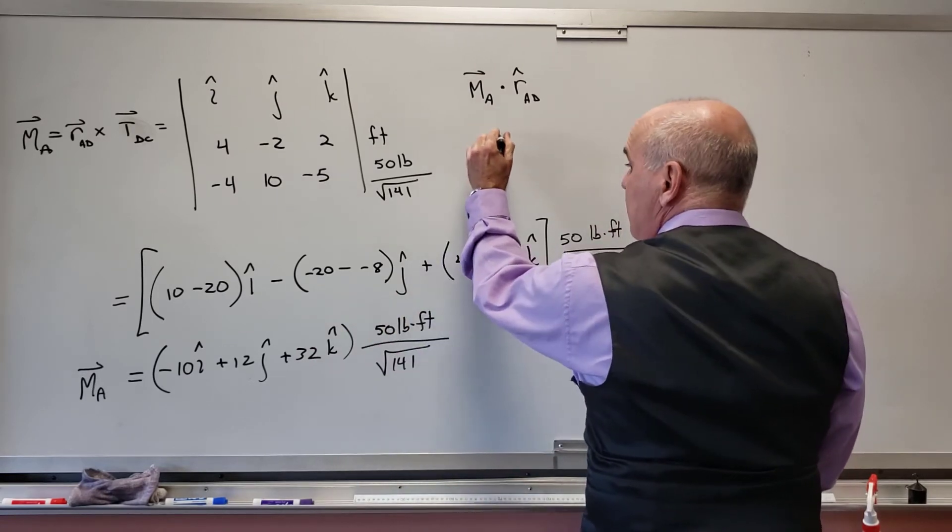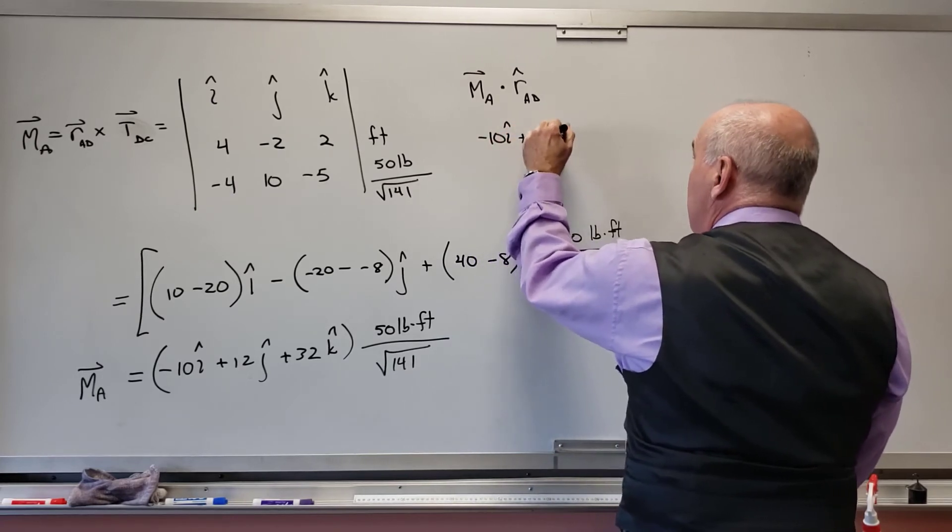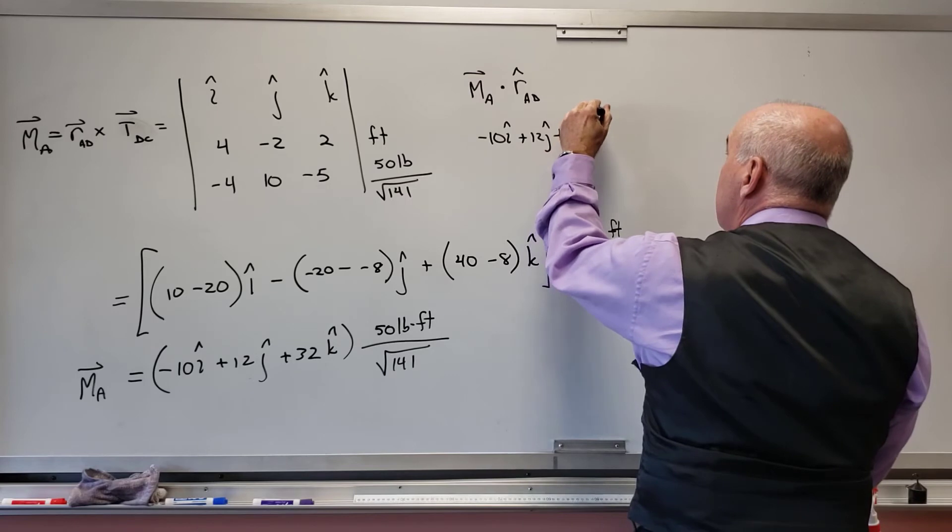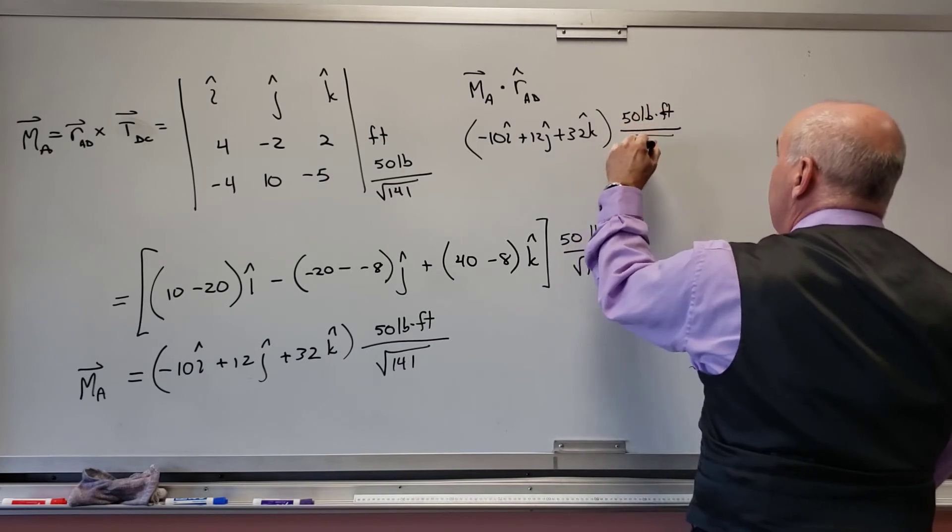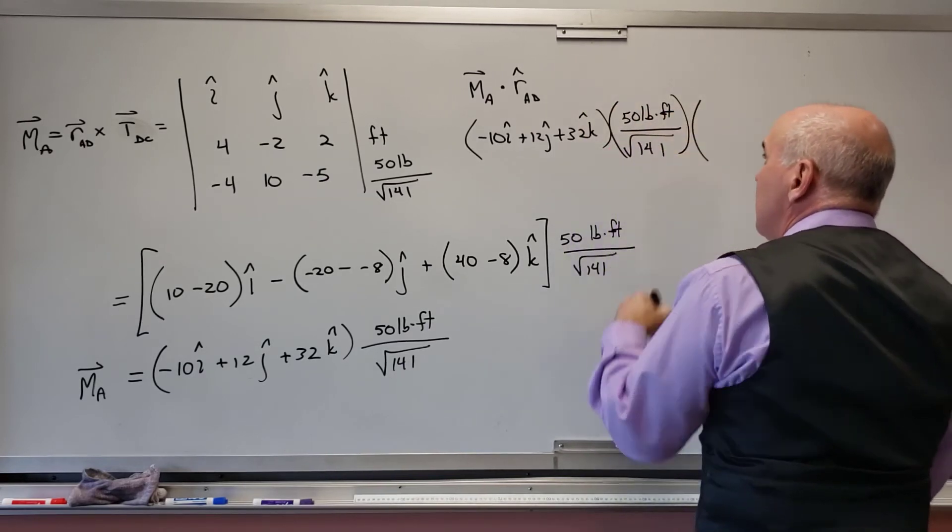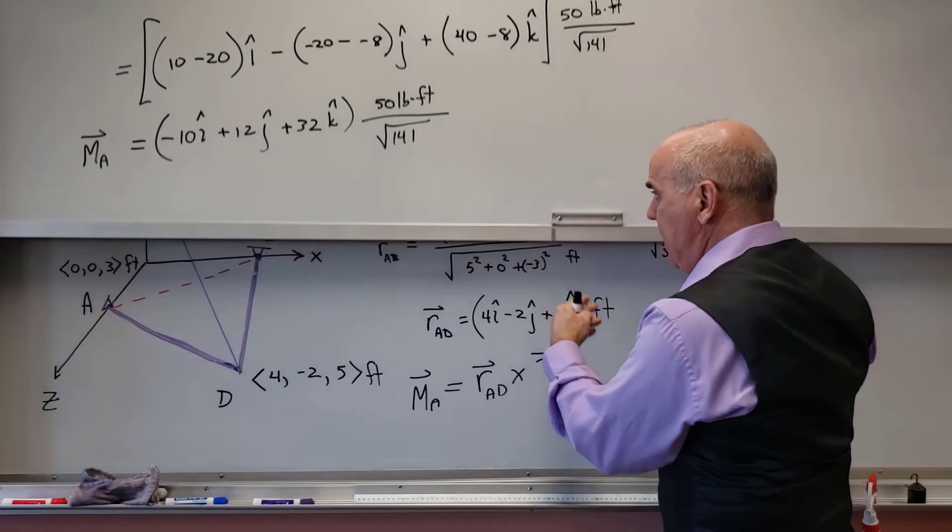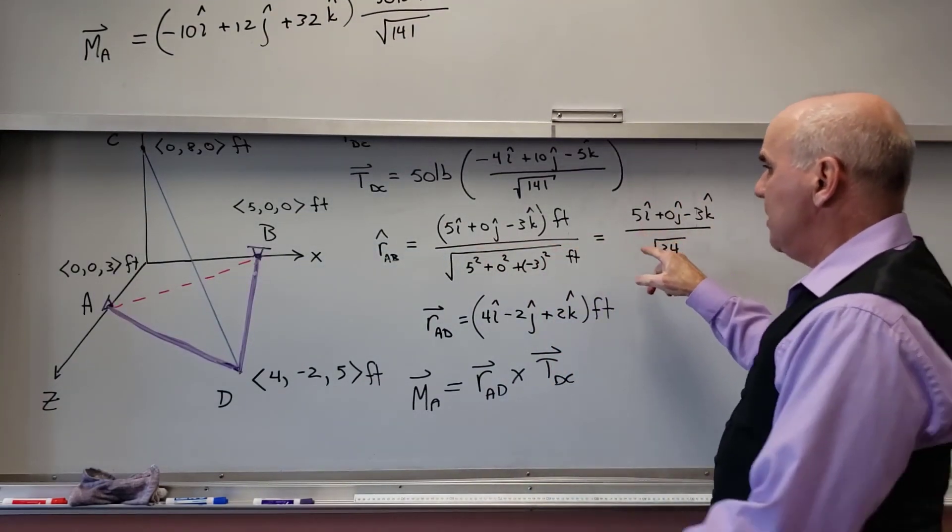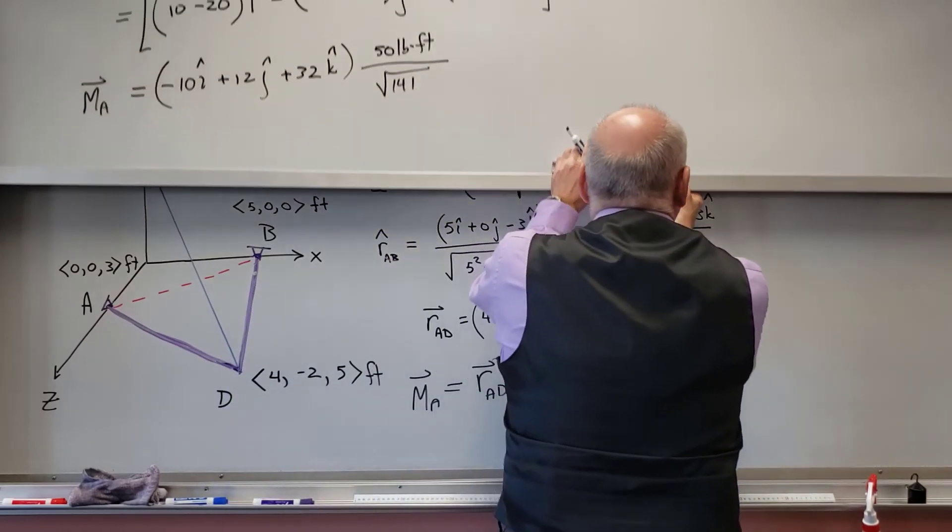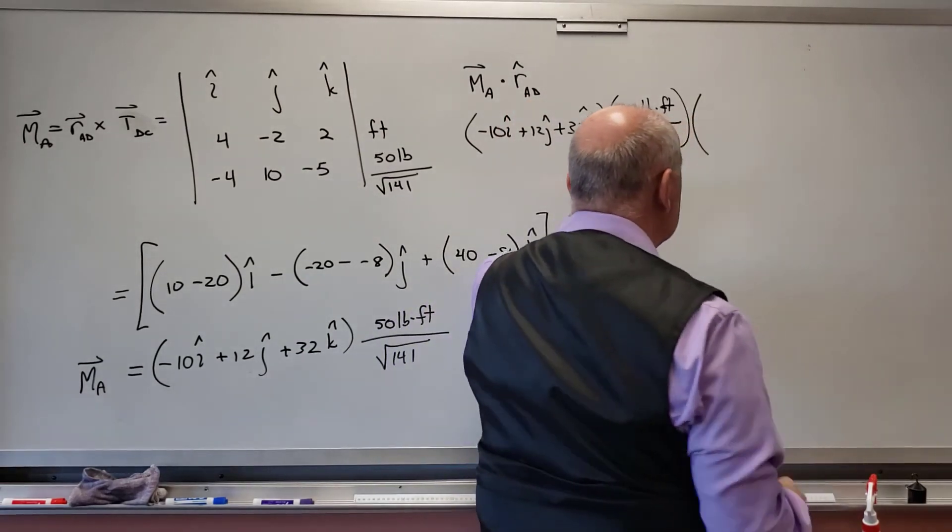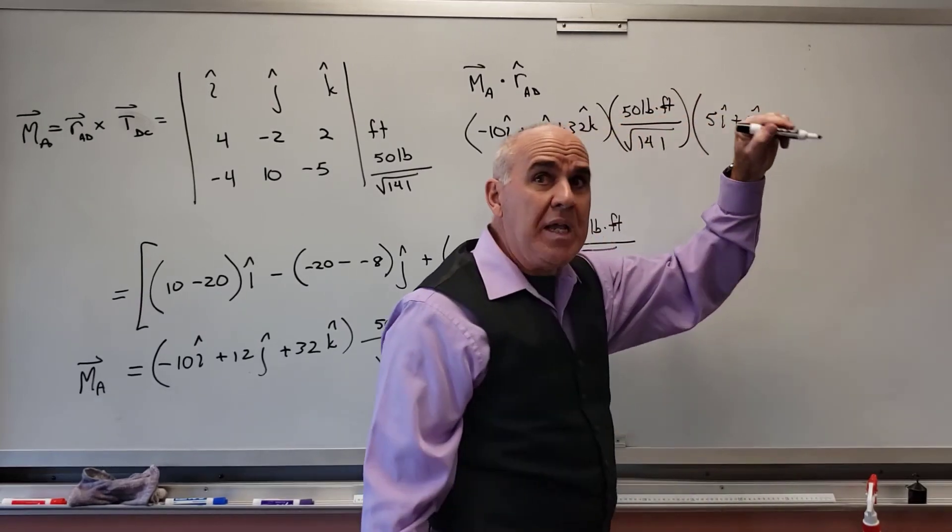So this is going to be, and again, I'm going to leave it like this. This is going to be (-10i + 12j + 32k) then there's 50 pound-feet over radical 141. And then I have (5i + 0j - 3k). Here's my unit vector.